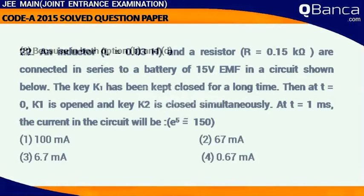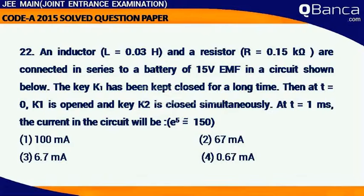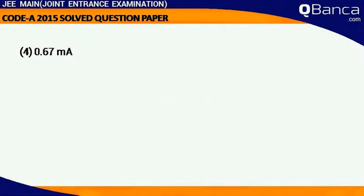An inductor L is equal to 0.03 H and a resistor R is equal to 0.15 kohm are connected in a series to a battery of 15 volt EMF in a circuit shown below. The key K1 has been kept closed for a long time. Then at T is equal to 0, K1 is open, K2 is closed simultaneously. At T is equal to 1 ms the current in the circuit will be, e power 5 is equal to 150. Answer 0.67 mA.